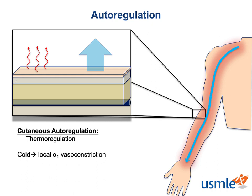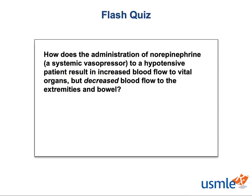That covers the basics of autoregulation in the special capillary beds. One final word of wisdom: autoregulation isn't just localized to the capillary beds we went over today. Virtually every single capillary bed has the ability to autoregulate based on need and myogenic feedback to some extent or another. But autoregulation in the capillary beds we went over today is a much more potent determinant of blood flow than in most. Now, thinking back to our case from the introduction — how does the administration of norepinephrine, a systemic vasopressor, to a hypotensive patient result in increased blood flow to vital organs but decreased blood flow to the extremities and bowel? Pause the video and think about this for a moment before moving on.